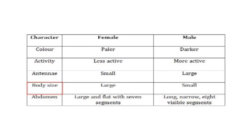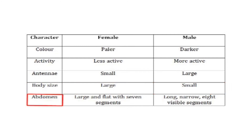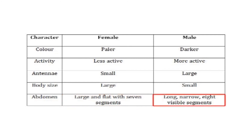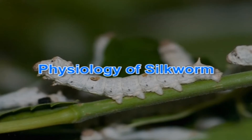Body size is larger in the female moth and smaller in the male. The abdomen is large and flat with seven segments in the female, but long and narrow with eight visible segments in the male. So far we have seen the morphology — the external characters of the silkworm at egg, larva, pupa and adult stages. Next is the physiology of the silkworm.